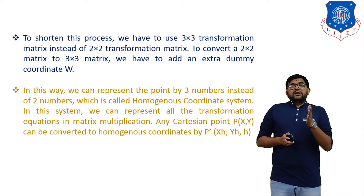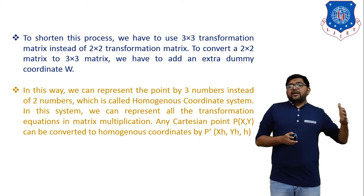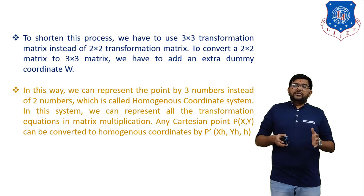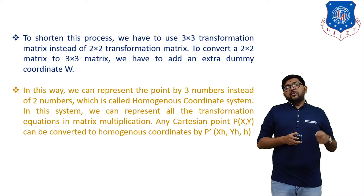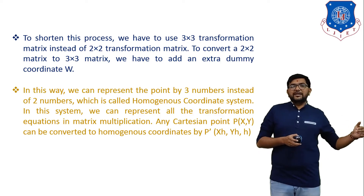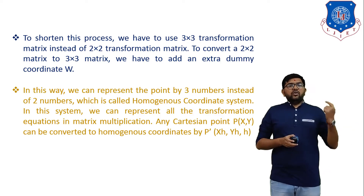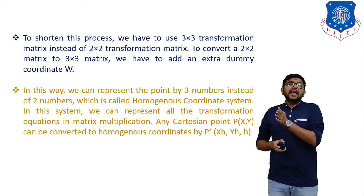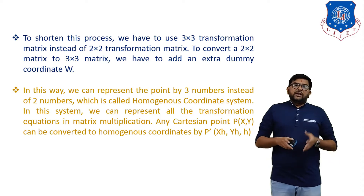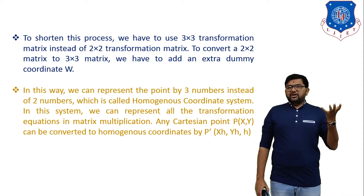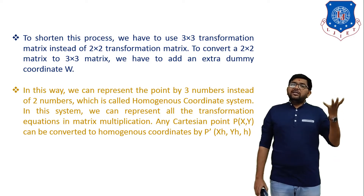One more thing — why is the homogeneous transformation matrix used? It is used to shorten the process of calculation. To shorten this process we use a 3×3 transformation matrix instead of a 2×2 transformation matrix. To convert a 2×2 matrix to a 3×3 matrix we have to add one extra dummy column. Up to now we derived equations of translation, rotation, scaling, and reflection — all in the form of a 2×2 matrix.